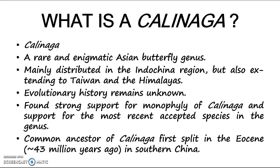In the research, they found that the common ancestor of Callinaga first split in the Eocene, about 43 million years ago, in southern China.